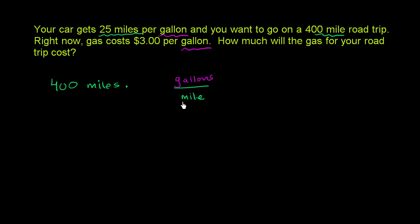And what are the gallons per mile? We have 25 miles per gallon. We have 25 miles for every one gallon, or you could say we have one gallon for every 25 miles. So I really just took the reciprocal of 25 miles per gallon and made it 1 over 25 gallons per mile.